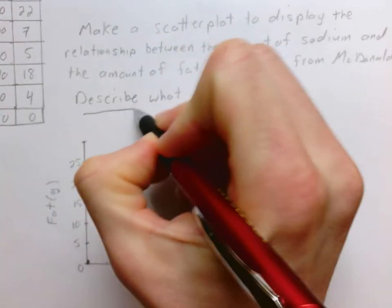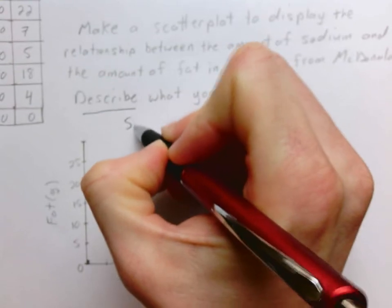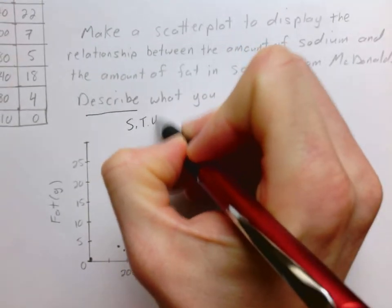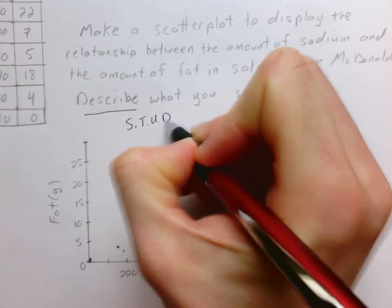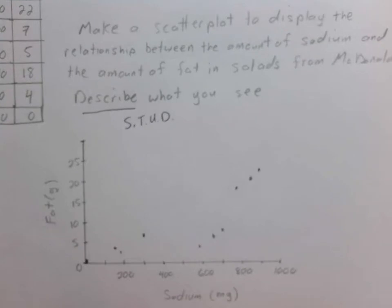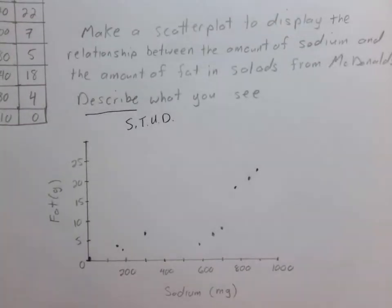That's when we look for STUD — that's our acronym for what we use to describe everything. We're looking for strength, we're looking for the type, for any unusual features, and for the direction.